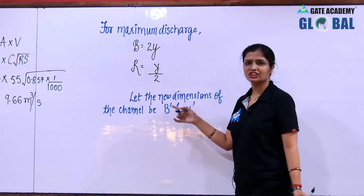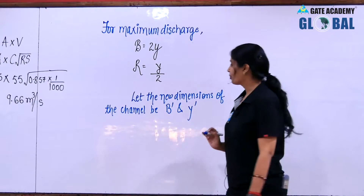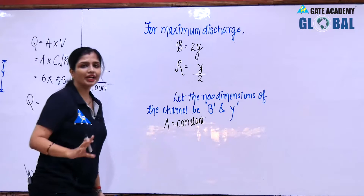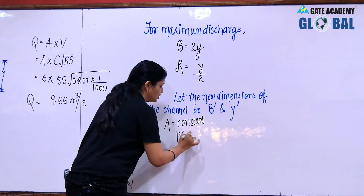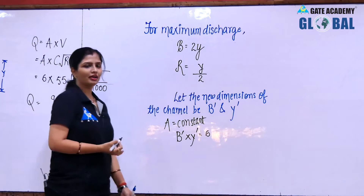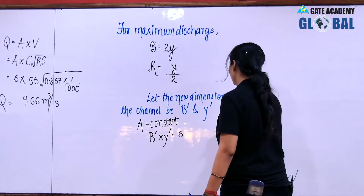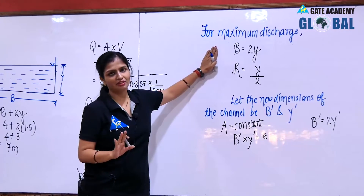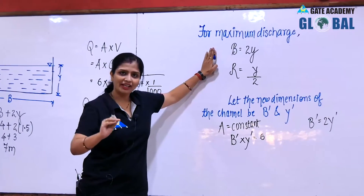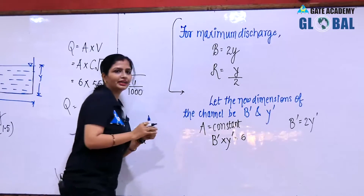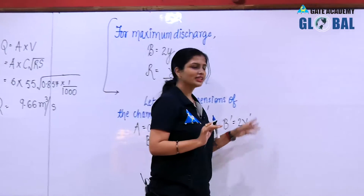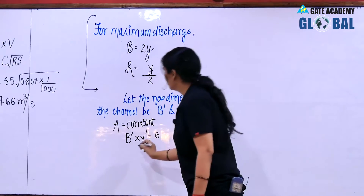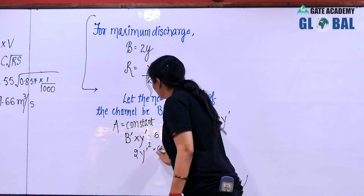Let the new dimensions of the channel be B dash and Y dash. Since area is constant at 6 meter square, B dash × Y dash = 6. For an efficient channel section, B dash should be 2 × Y dash. Substituting: 2Y dash × Y dash = 6, so 2Y dash² = 6.